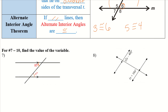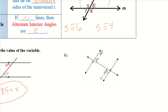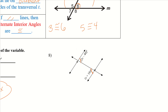These two are alternate interior angles, so they have to be equal. A nice thing with number 7 is we didn't have to solve for anything — we just had to set them equal. For number 8, alternate interior angles are congruent, so 2x minus 40 equals x plus 10. Subtract x: x minus 40 equals 10. Add 40: x equals 50.